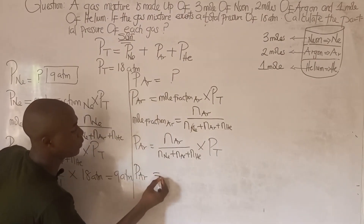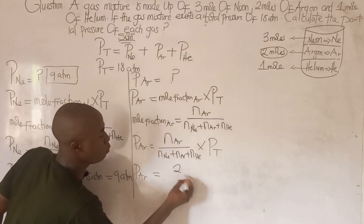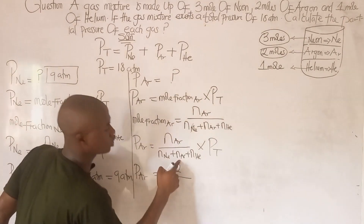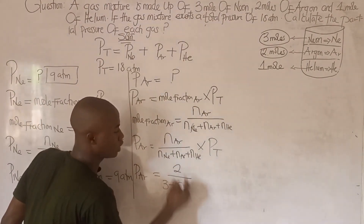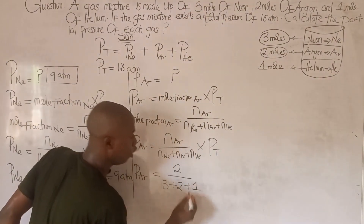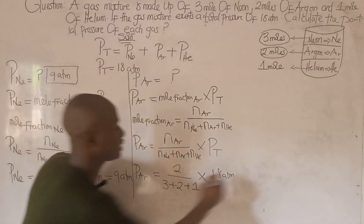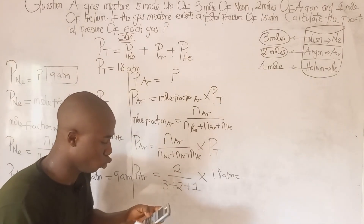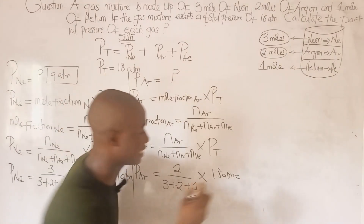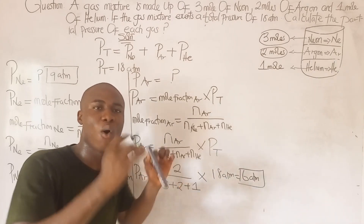Inputting the parameters: number of moles of Argon is 2, over 3 plus 2 plus 1, times 18 atm. So 2 over 6 times 18 gives 6 atm. The partial pressure of Argon is 6 atm.